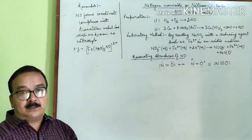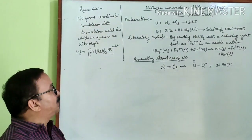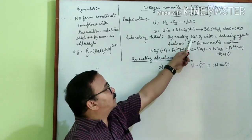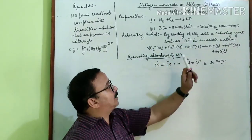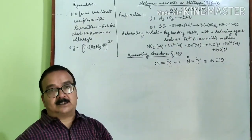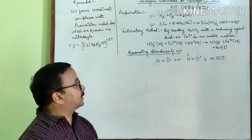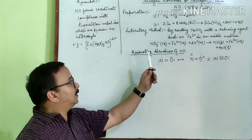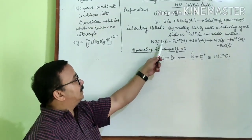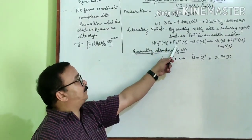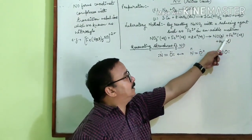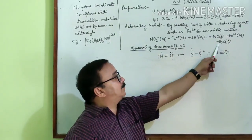Now there is a lab method. In lab we can prepare nitric oxide by the reaction of sodium nitrite with a reducing agent such as Fe2+ in acidic medium. The reaction is NO2- in aqueous medium + Fe2+ + 2H+ gives nitric oxide + Fe3+ + water.